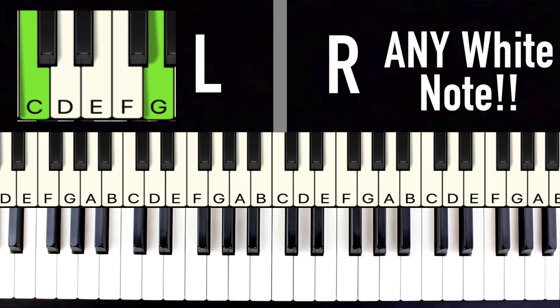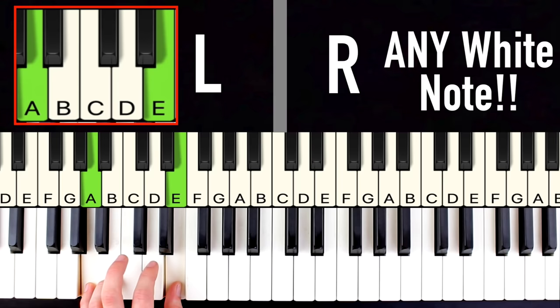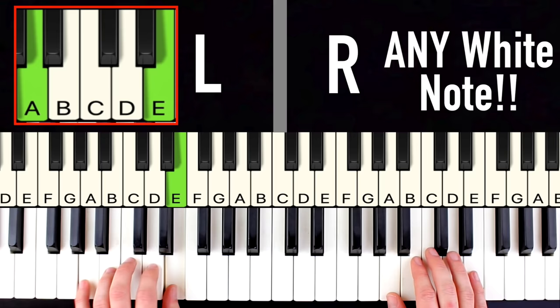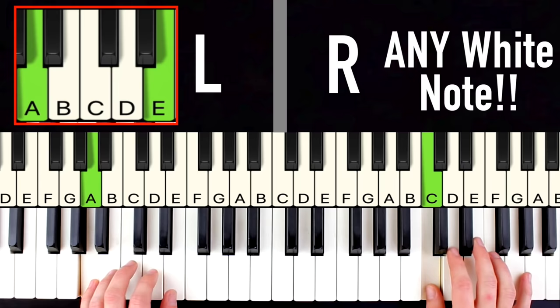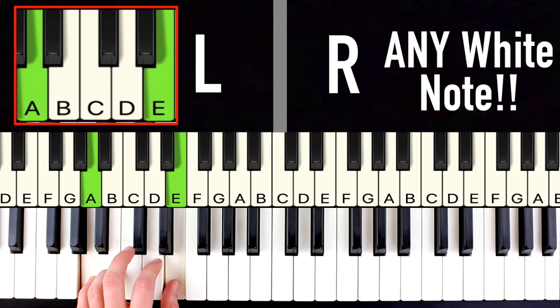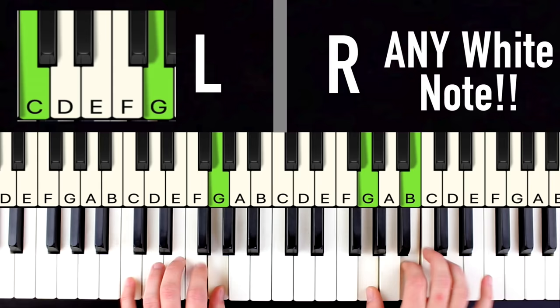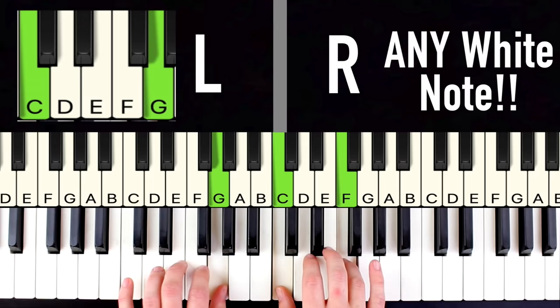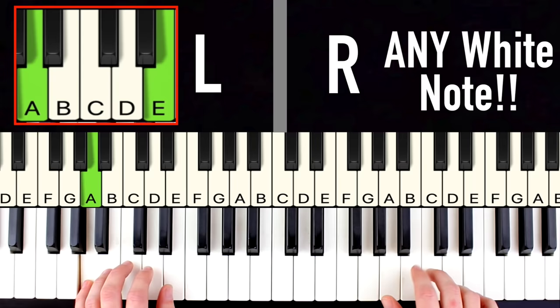Now at this point your friends are going to think that you're an absolute wizard on piano, but guess what? It gets even better. Because if you take your left hand and you shift it down two notes, so one two, you can play these two notes and any note in your right hand in the white notes. So usually I like to start off in our normal position and then partway through the song I'll move down to this position. So it's going to sound like this.